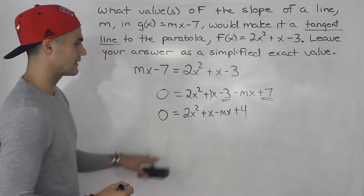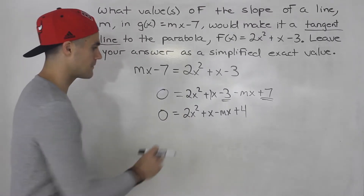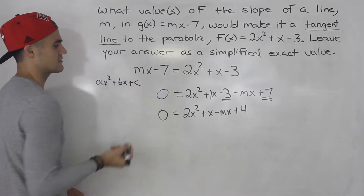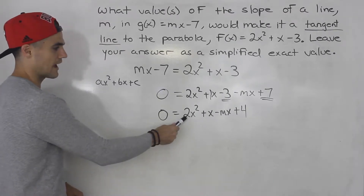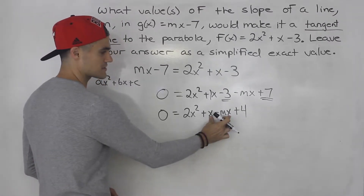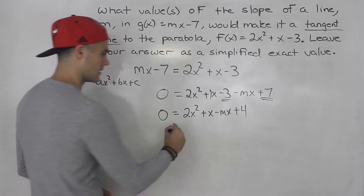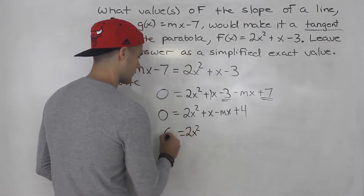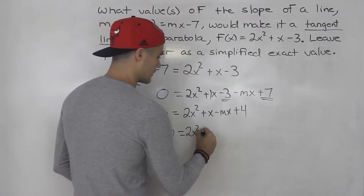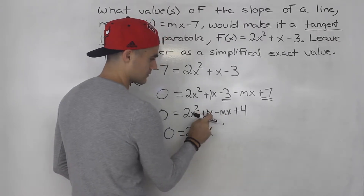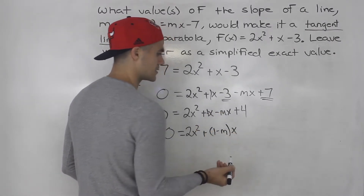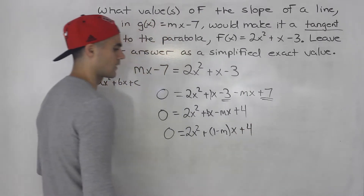Now we want to make this look like ax² + bx + c form. We already have the a value in front of x² and the c value. For the b value, because we have two x terms and this m, we can't simplify the x's directly. So we factor out an x from those two terms, leaving us with (1 − m). So we have 2x² + (1 − m)x + 4, where 1 − m is the b value.